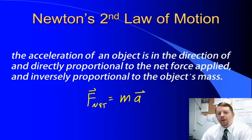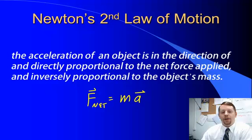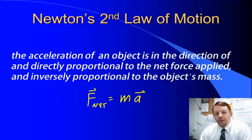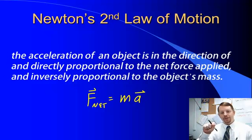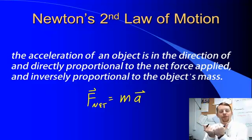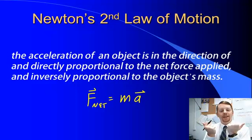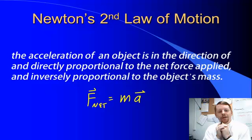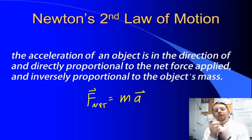Net force is also one of the key points. Net force means it's the overall force after you've looked at all the vectors. For example, if you are fighting with your sister or brother over a piece of Halloween candy, one of you pulls with a force of 5 newtons one way and the other pulls with 5 newtons the other way, the net force is zero — there will be no acceleration on the candy. However, if one pulls with 6 newtons and the other with 5 newtons, the person pulling with 6 newtons causes acceleration in their direction.